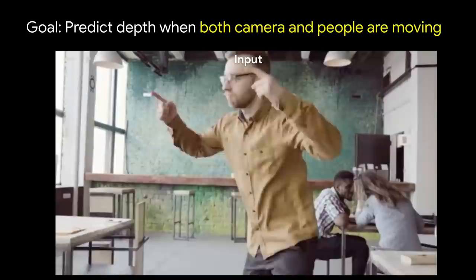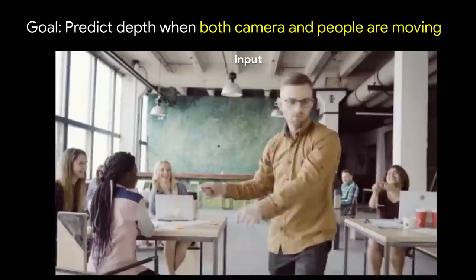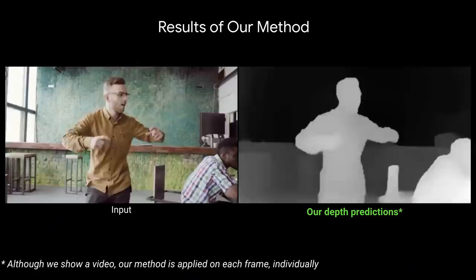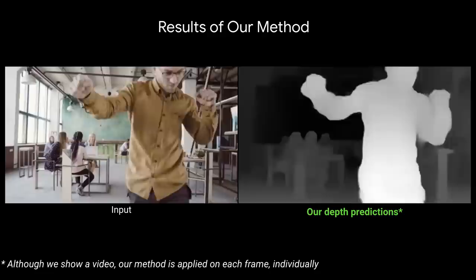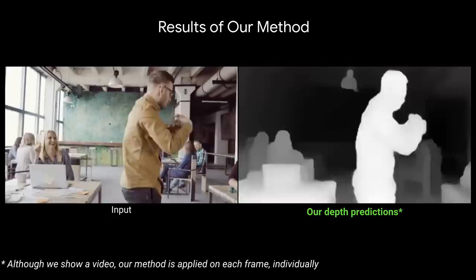The goal of this work is to estimate dense depth maps in cases where both the camera and people in the scene are freely moving. Multi-view stereo methods apply geometric constraints that do not apply to moving people, and treat people as noise or completely ignore them. To overcome this problem, we apply a data-driven approach to predicting depth in human regions.